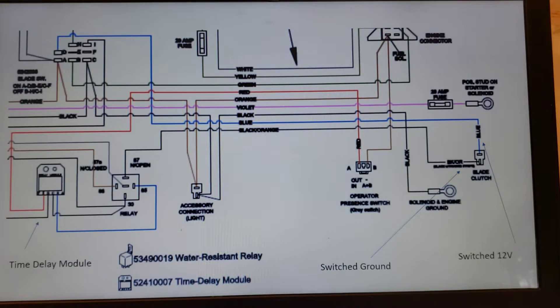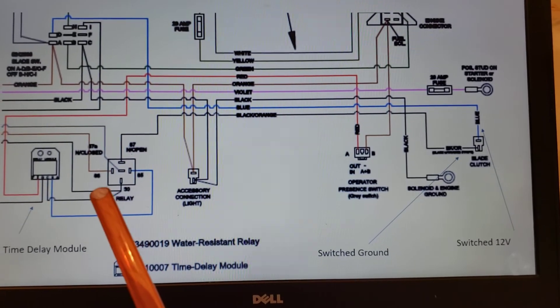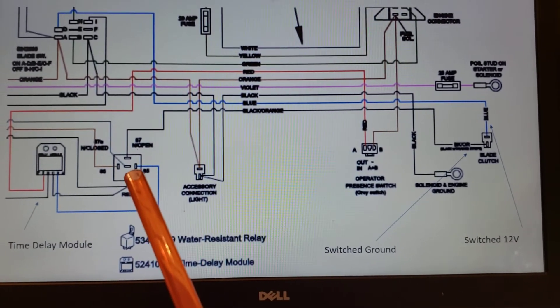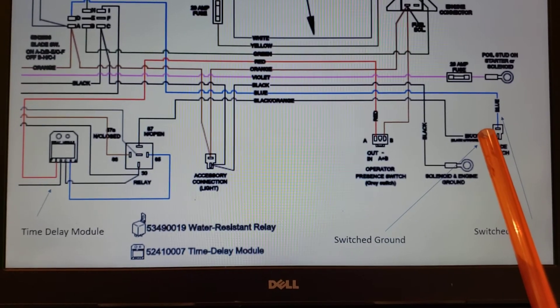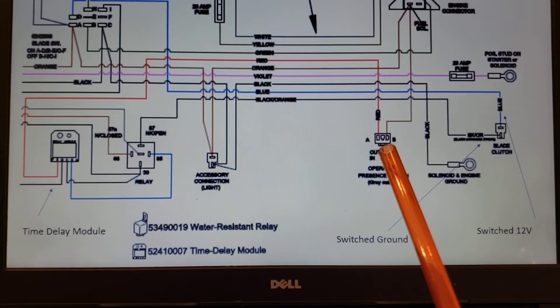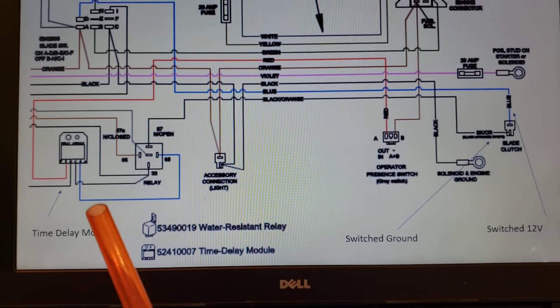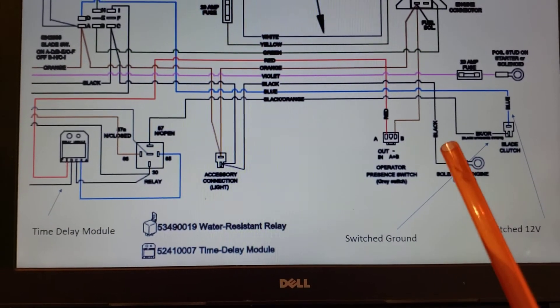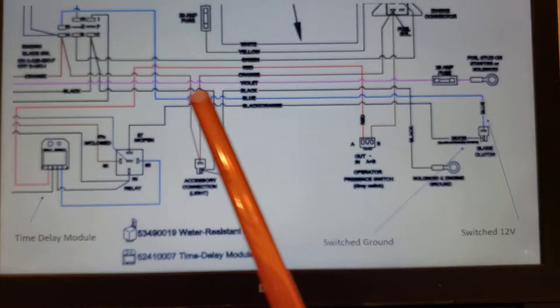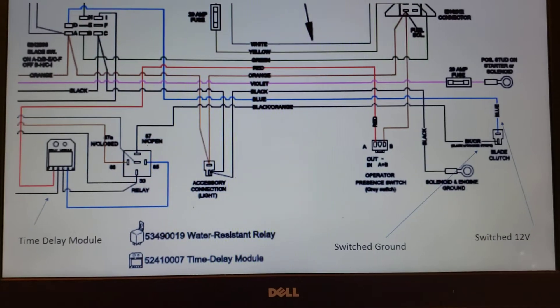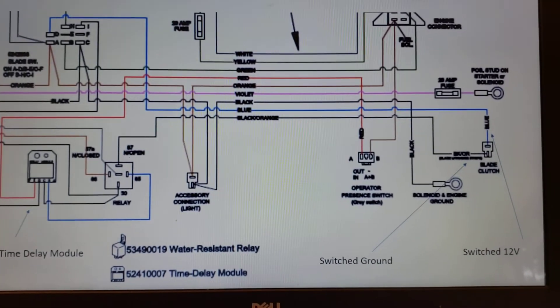And on this diagram here we're showing that in order for the clutch to turn on, the switch ground, which is controlled by the delay module and this protection relay, those need to be providing a nice ground over to the clutch. And then this present safety switch, which is sending voltage over to the delay module, that needs to be present to enable that ground over to the clutch. And then over here there's a positive 12-volt switch that also needs to be turned on with the blade switch. So that's what needs to be engaged in order for the blades to turn on.